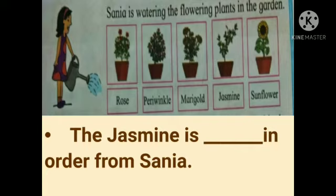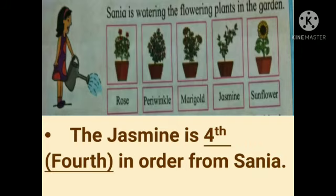Let's move to the second question. The jasmine is blank in order from Sanya. Students, where is the jasmine — in which place from Sanya? The jasmine is fourth in order from Sanya.